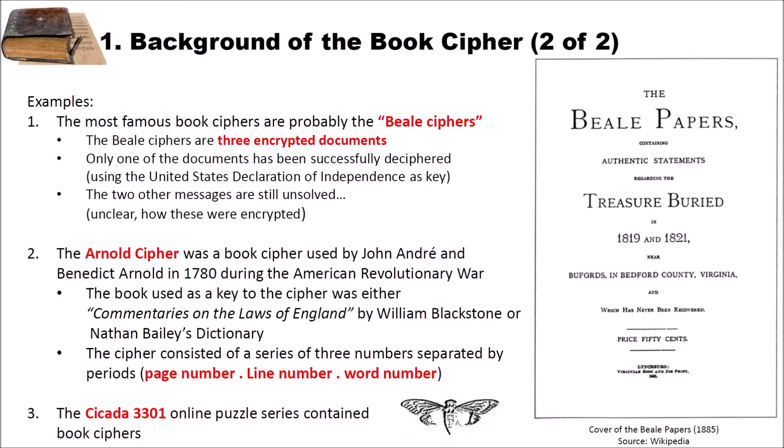Here are three examples for book ciphers in history. The most famous book ciphers are probably the Beale ciphers. The Beale ciphers are three encrypted documents. Only one of the documents has been successfully deciphered using a copy of the United States Declaration of Independence as key. The two other messages are still unsolved. Here on the right side you see a cover of the so called Beale papers.